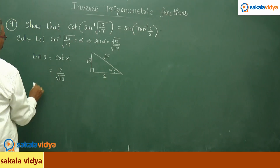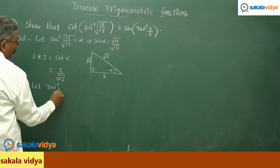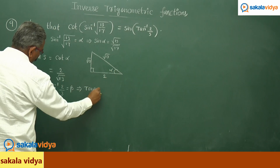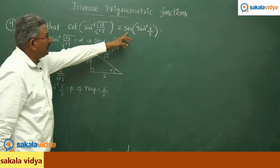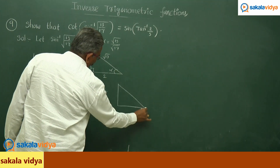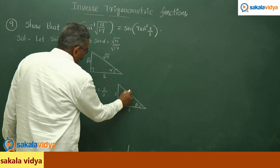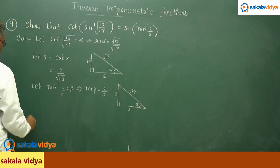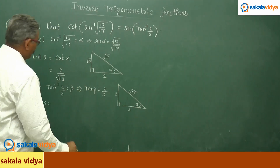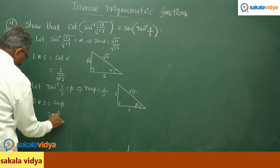Now let tan⁻¹(2/3) = β, which implies tan β = 2/3. But we need to find sin β. Consider the triangle with angle β: the opposite side is 2, the adjacent side is 3, so the hypotenuse is √(4+9) = √13. Now for the RHS, sin β = opposite/hypotenuse = 2/√13.